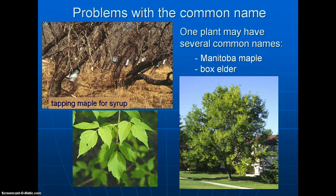Here is an even more distinctive example — Manitoba maple, which we know very well from the prairies. Did you know that Manitoba maple is also known as box elder? Some people had no idea these are both the same plant, Acer negundo. So these two common names have actually created a problem with communication about these plants.